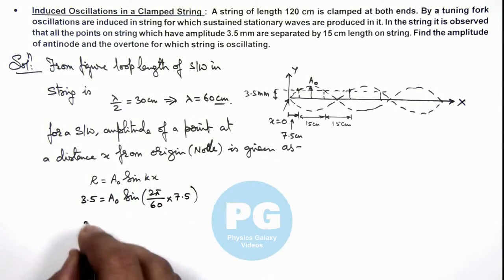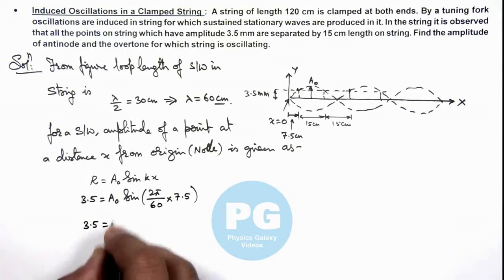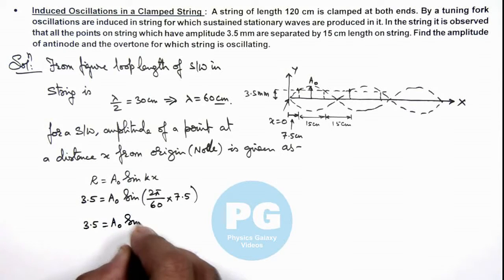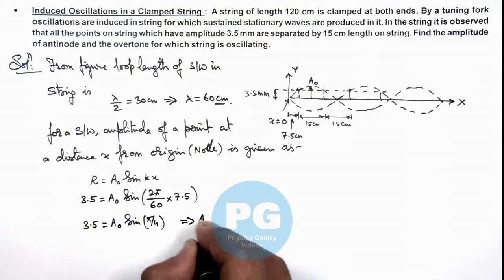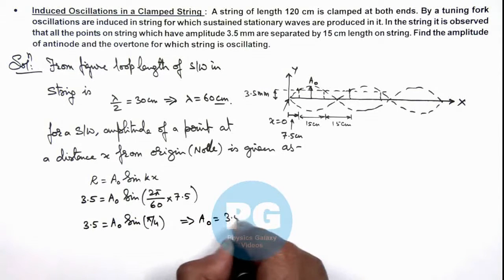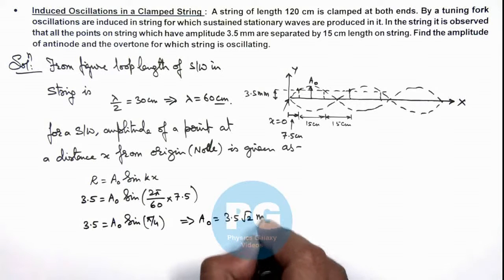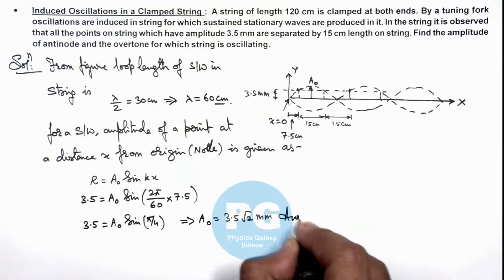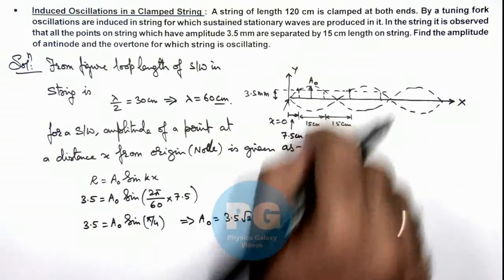Further simplifying this gives 3.5 = A₀ sin(π/4), which gives us A₀ = 3.5√2 mm. That is the result of this problem for the antinode amplitude.